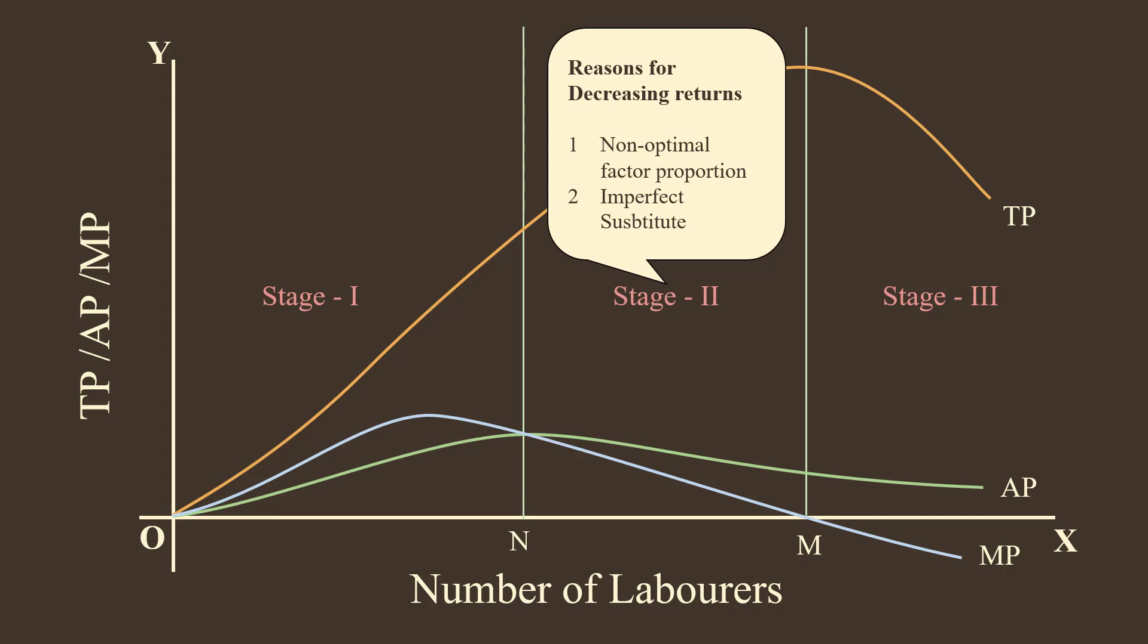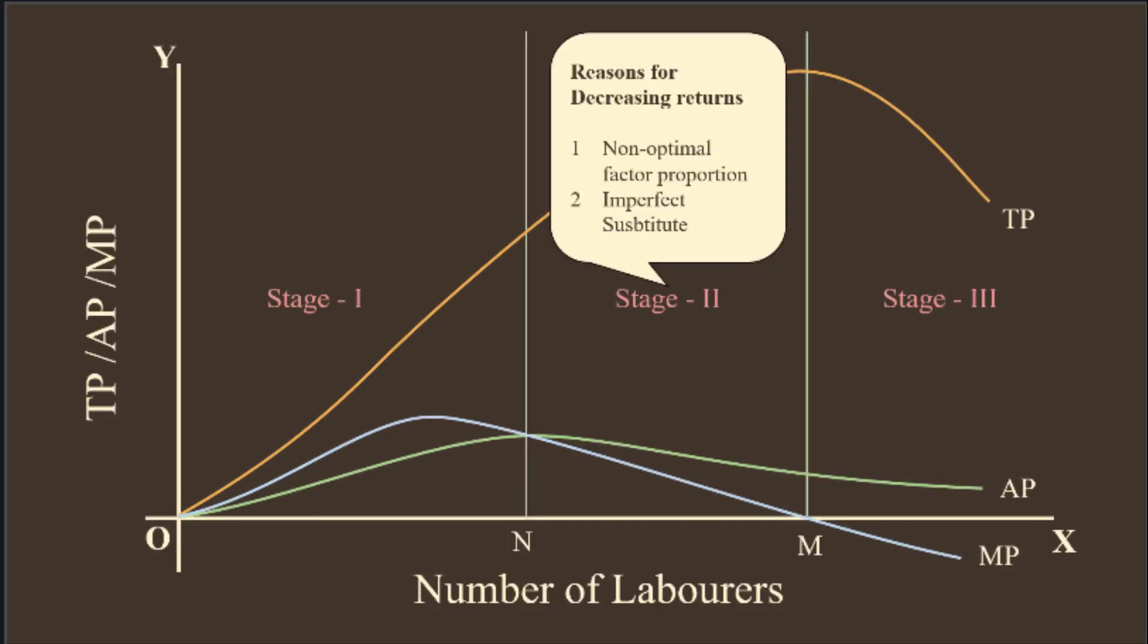2. Imperfect Substitution. There is a limit to substitute one factor for another. These factors contribute to the operation of decreasing returns in the second stage.